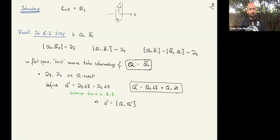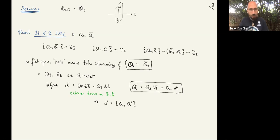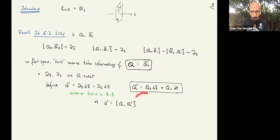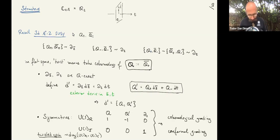That's just forming a linear combination. When I act with this Q-prime, I take Q-plus of a local operator and then wedge with dz-bar, Q-minus, and wedge with dt. So Q-prime is going to be used for producing descendants.